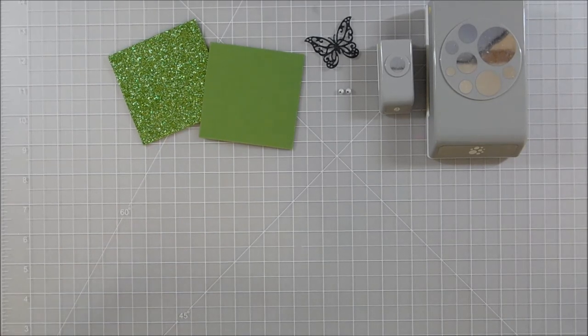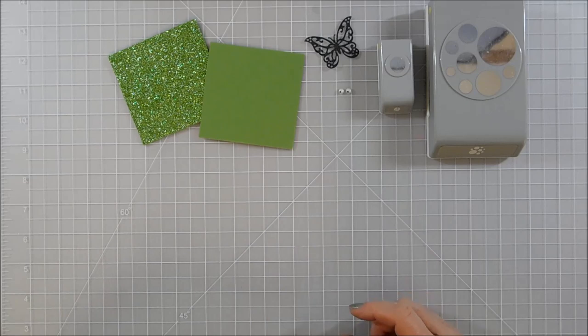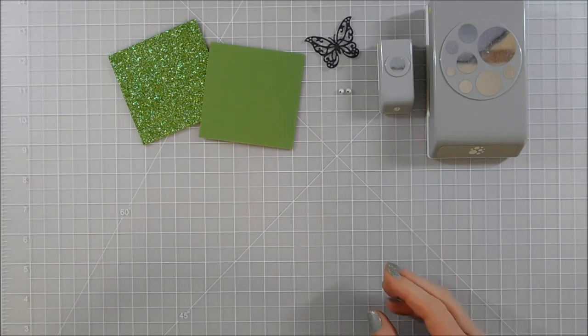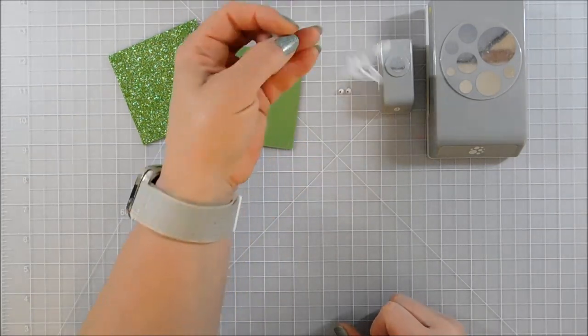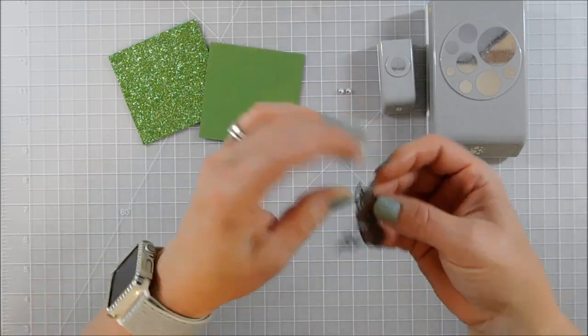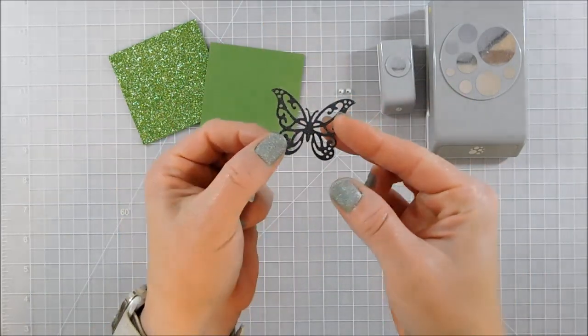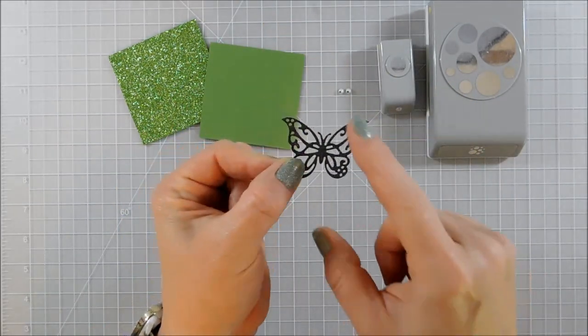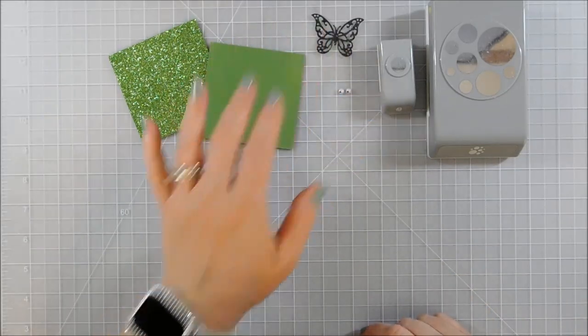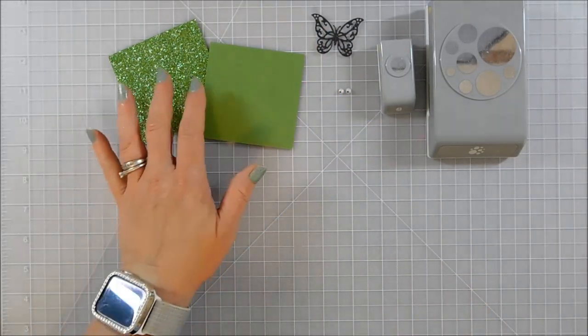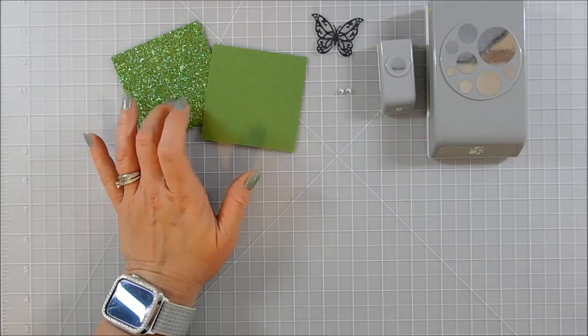We're going to be doing a caterpillar and of course that's going to be all circles and it's super simple. I'm going to use this little butterfly here that I cut out of glitter paper just for the antenna and I'll save the wings for another project. I thought I would also do some of the body segments glittery also.